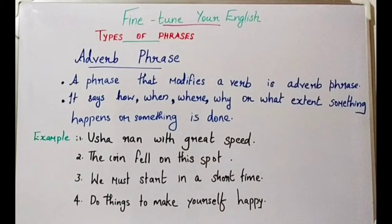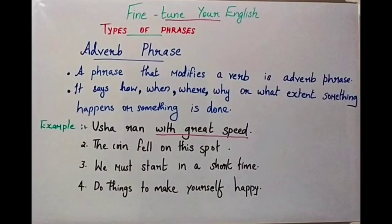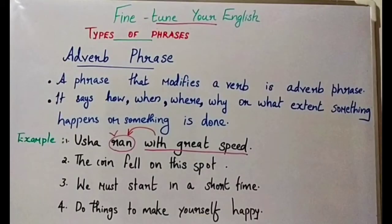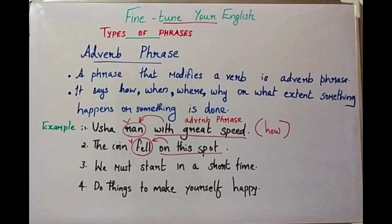Let's see the examples. The first example is: Usha ran with great speed. Here, 'with great speed' is the Adverb Phrase, and it says something more about the verb 'ran.' It is also giving the answer to the question: how did Usha run? Usha ran with great speed. We are getting the answer to the question 'how did Usha run?' and that answer is the Adverb Phrase.